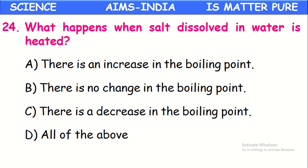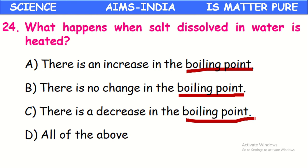What happens when a salt solution is heated? When salt dissolves in water it forms a salt solution. On heating, water slowly evaporates. The question is about boiling point: when any solid substance is dissolved into water, the boiling point of that liquid increases. Water normally boils at 100°C, but when salt is added its boiling point increases slightly above 100°C. So there is an increase in the boiling point of water.